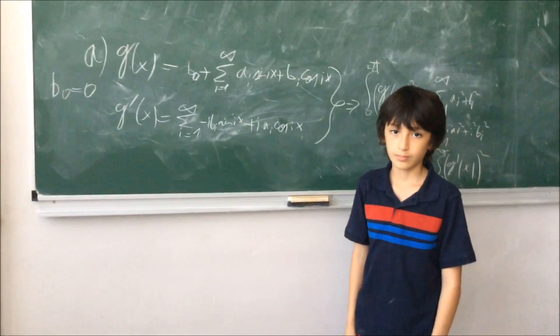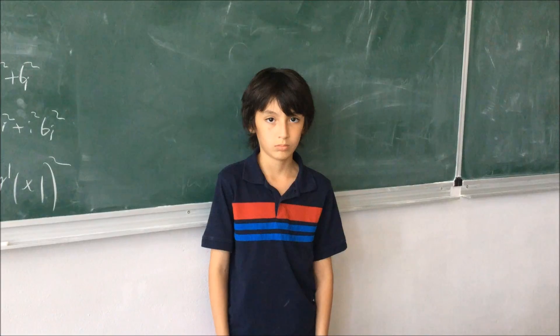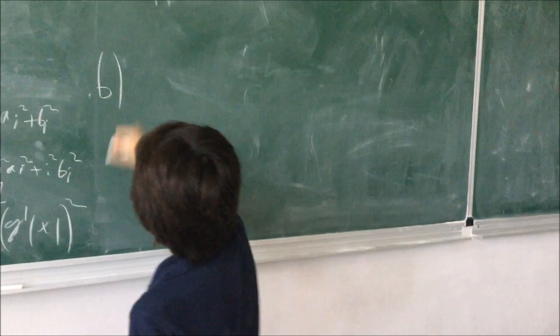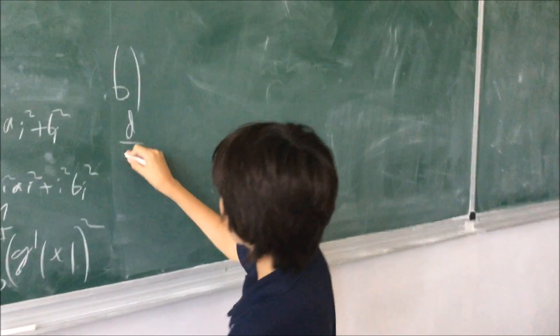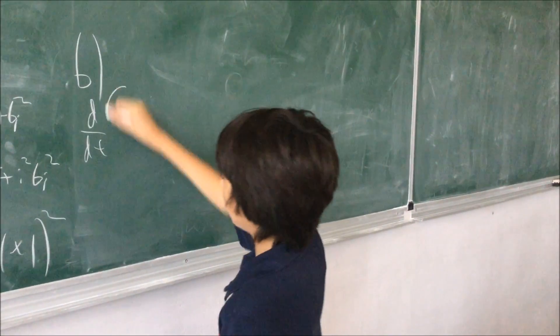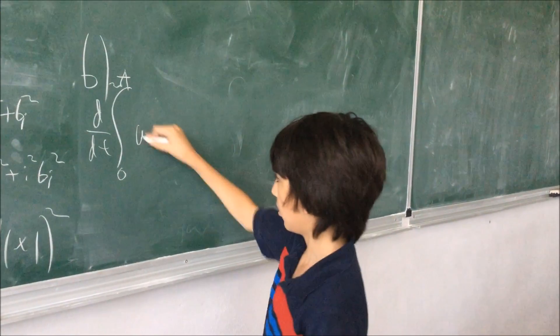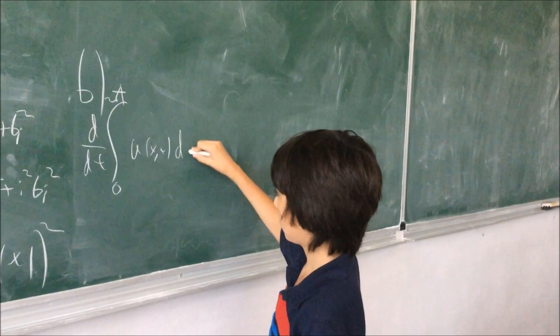Now, let's prove part B. Let's consider the derivative with respect to t of the integral from zero to pi of u of x, t dx.